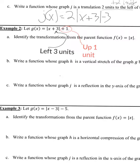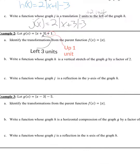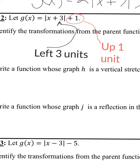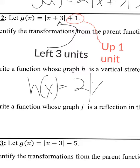Next, write a function whose graph H is a vertical stretch of graph G by a factor of 2. If you're vertically stretching, you just put a 2 on the outside. So H of x equals 2 times the absolute value of x plus 3, plus 1.